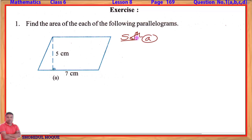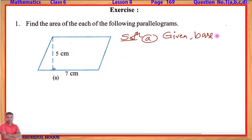Part A: First, we write the given values. Looking at the figure, we identify the base — the line along the bottom of the parallelogram. The base is given as 7 cm.